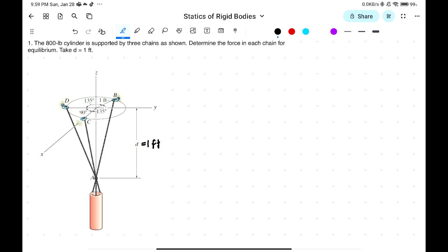So, first step, draw the free-body diagram. Measure the weight. The weight acts downward, this is 800 pounds. Then we have tension AB, the chain AB has tension AB. Then tension AC. And tension AD.